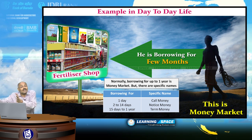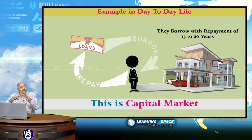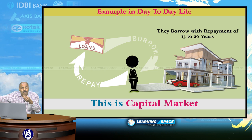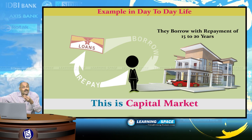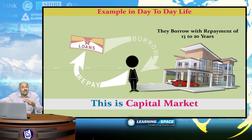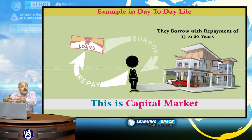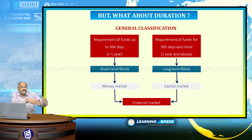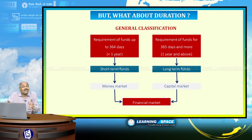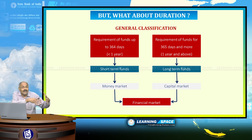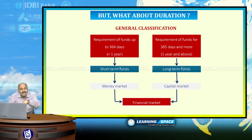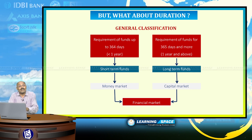If you are constructing a house, you will borrow money from a financial institution for a longer duration — 10, 15, or 20 years. So borrowing for a longer duration is nothing but the capital market. To summarize: borrowing for a few days is call money, borrowing for a few months is a money market instrument, and borrowing for a longer time period is capital market.